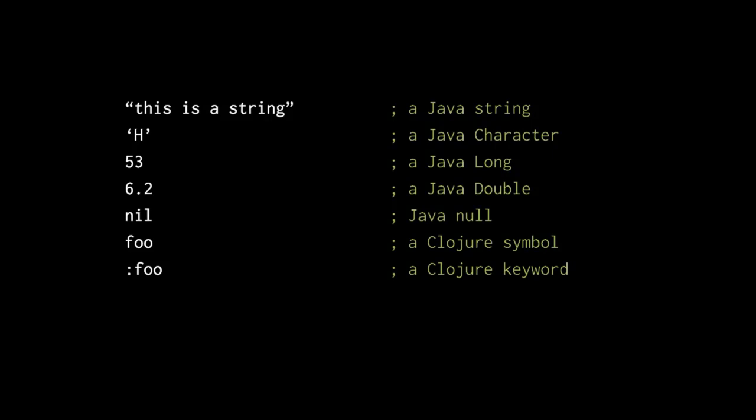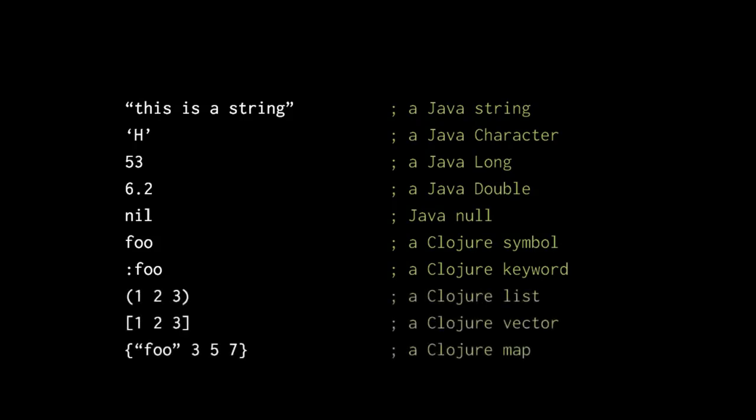What Clojure calls a keyword is just like a symbol, but it begins with a colon. Keywords exist in the language mainly because we sometimes want something that's just like a symbol, yet distinct from a symbol. Clojure has three basic types of collections — lists, vectors, and maps — all of which are persistent. Lists are denoted by parentheses, vectors by square brackets, and maps by curly braces. Clojure treats commas like whitespace, so you can add commas between elements if you prefer, but commas are never required.